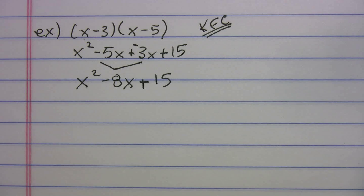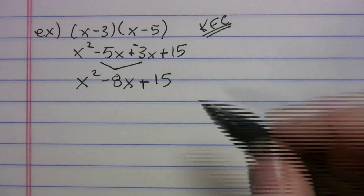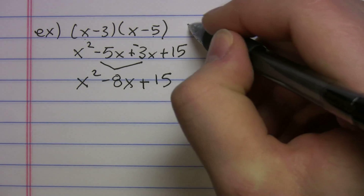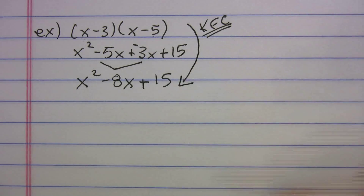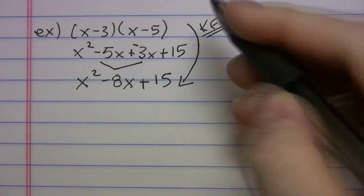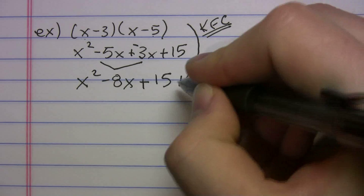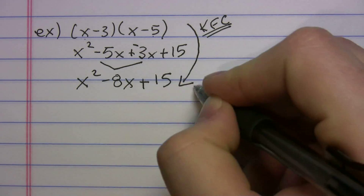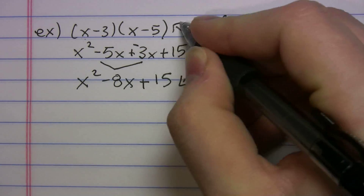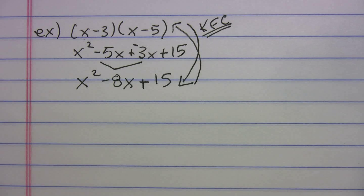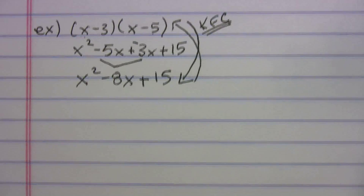So I gave you three examples on how to FOIL. As long as you remember First, Outer, Inner, Last you can get these right. FOILing goes in one direction — when we reverse foil, you start off with an expression and I ask you to bring it back to the double bubble. Let's do a section on reverse foiling.